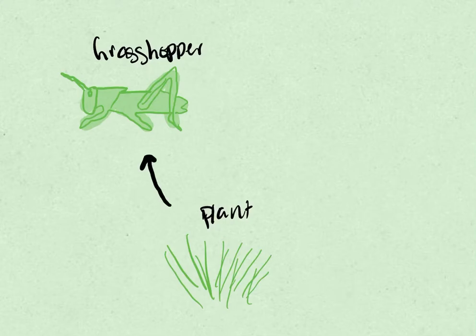When we are drawing food chains, it's important to note that the arrow goes from the source to where the energy is going. So in this case, the source is the plant, and the grasshopper is the one that's taking the energy. So that's important to note.